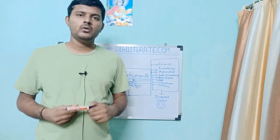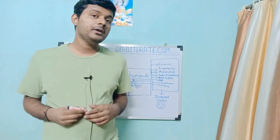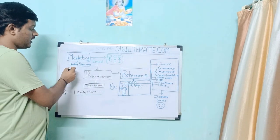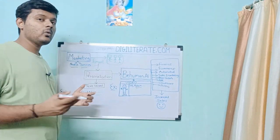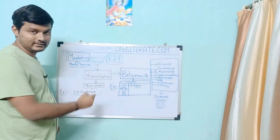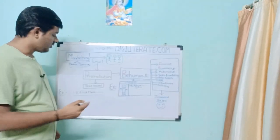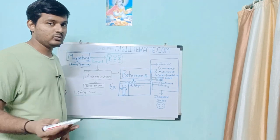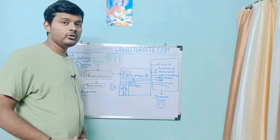Welcome to the Digiliterate YouTube channel. In this video, I'll be talking about an app called BeHuman.ai. If you are into marketing and reaching out to multiple people via email, and you are selling your product or services, then personalization is very important. The old way of personalization in email campaigns was text-based, using variables like first name, company name, etc.